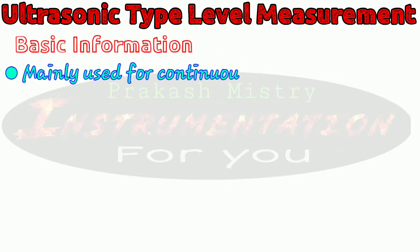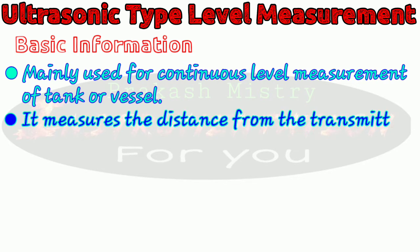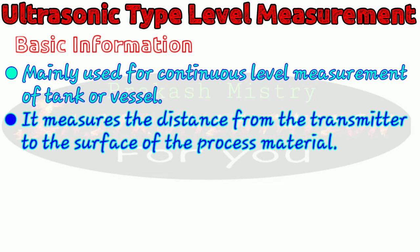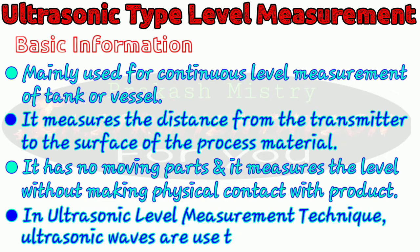An ultrasonic type level measurement system is mainly used for continuous level measurement of a tank or vessel. An ultrasonic level measuring instrument measures the distance from the transmitter to the surface of the process material. The ultrasonic level transmitter has no moving parts and it measures the level without making physical contact with the product. Due to this characteristic, it is more suitable for measuring the level of tanks containing corrosive, boiling or hazardous chemicals. Similarly to radar type level measurement which uses radio waves, ultrasonic level measurement uses ultrasonic waves to find out the level of the product in the tank, silo or vessel.